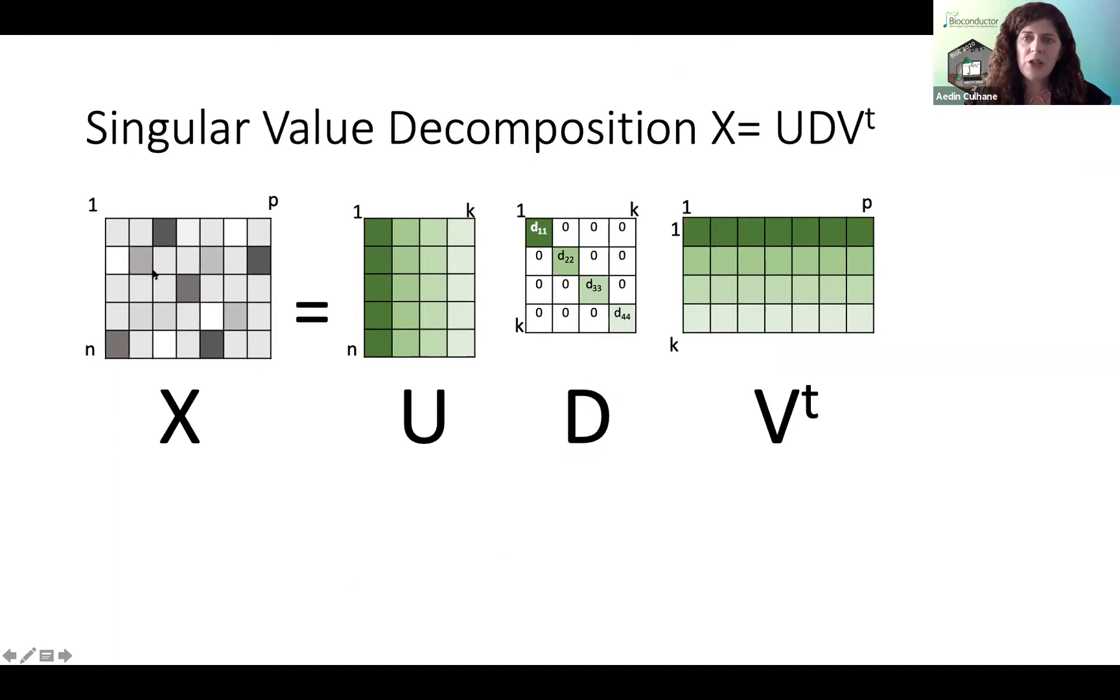And these are special matrices with really nice properties. So U and V are called singular matrices, the left and the right singular values. And then D is a diagonal matrix of singular values. This matrix is all zeros except for the diagonal. So essentially it's a vector. And that vector tells you how important each of the different eigenvalues or singular values that were found were. And these are ranked such that the first is the largest, the next is the next largest, and so forth.